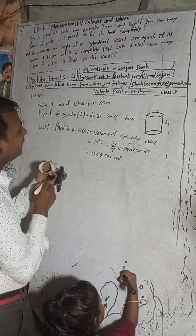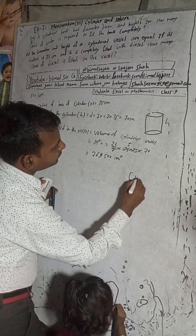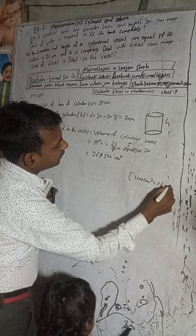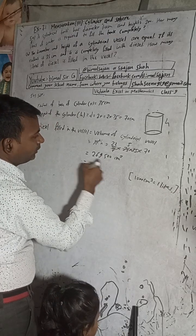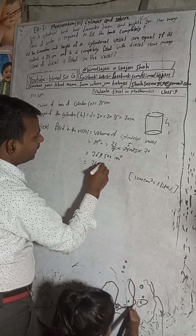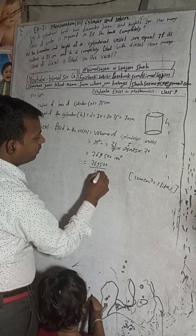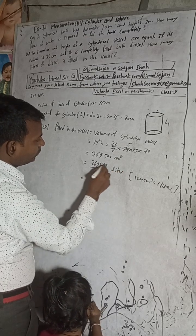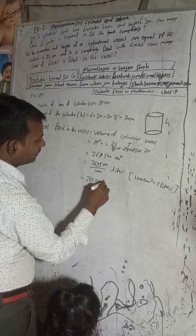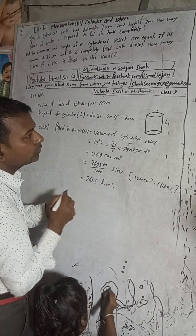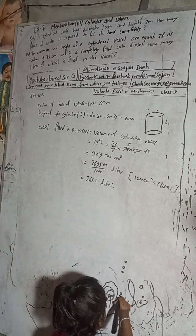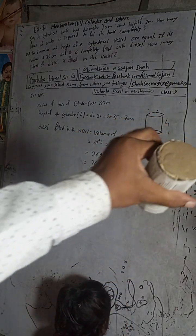Now, to convert to liters, we know that 1000 cubic centimeters equals 1 liter. So dividing 269,500 by 1000 gives us 269.5 liters. This is the required solution.